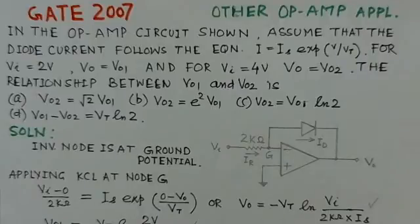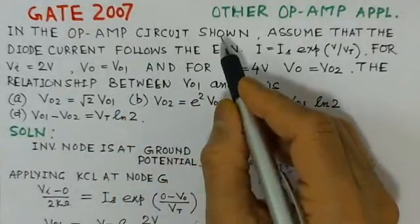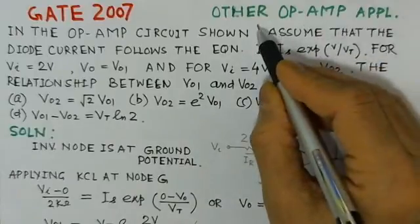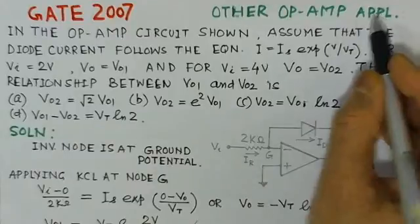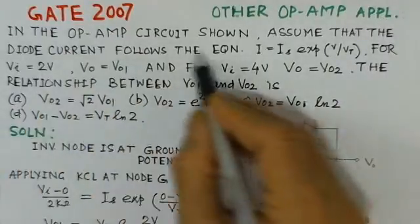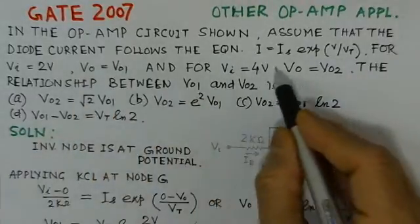The present problem is from GATE 2007 and it is based on the other than linear applications of the operational amplifier. The problem is in the operational amplifier circuit shown, assume that the diode current follows the equation I is equal to Is exponential V over Vt.